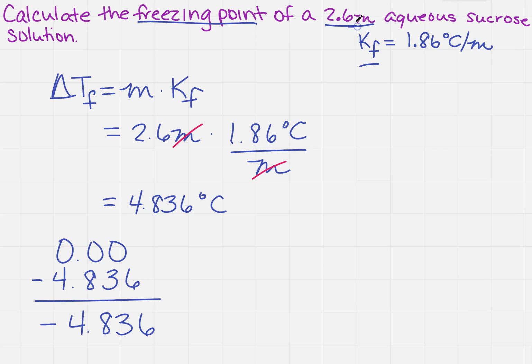And I notice up here there's how many significant figures in 2.6 molality. Well, there's 2, so I come to the 8. I look to the next number. The answer is going to be minus 4.8 degrees C.